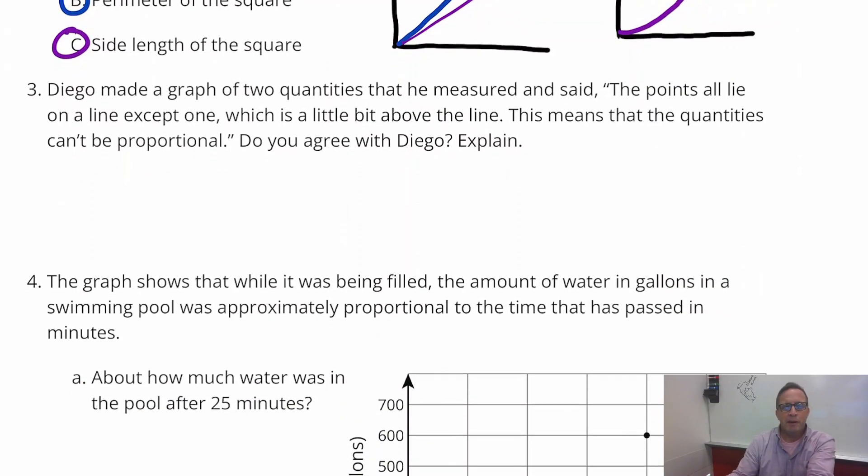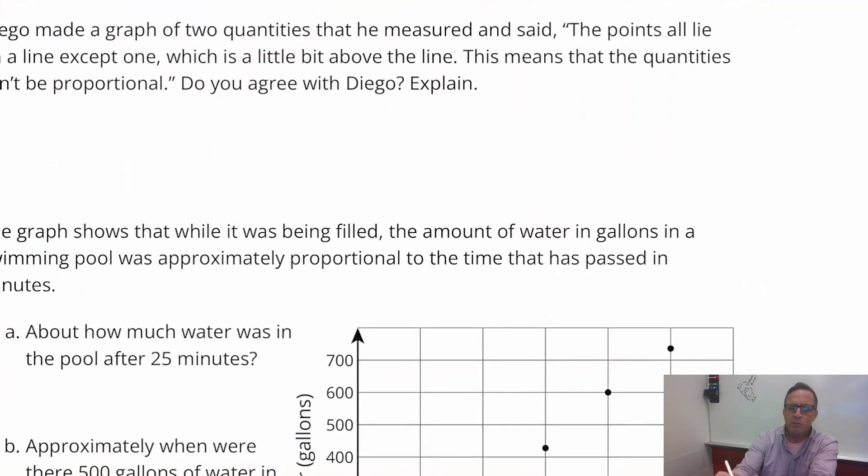Number three. Diego made a graph of two quantities that he measured and said the points all lie on a line except one, which is a little bit above the line, which means the quantities can't be proportional. So do you agree? This again, this is something we talked about during the lesson in class.